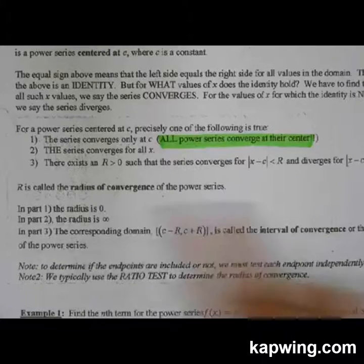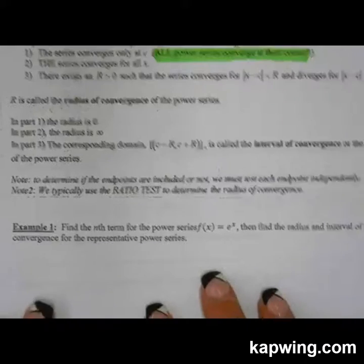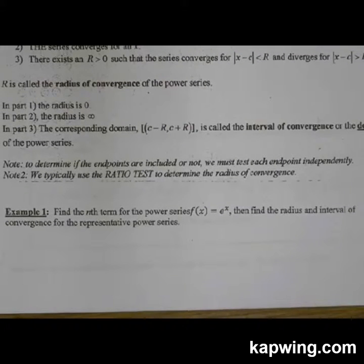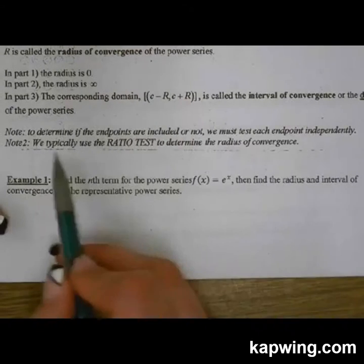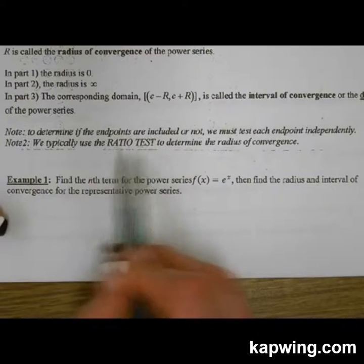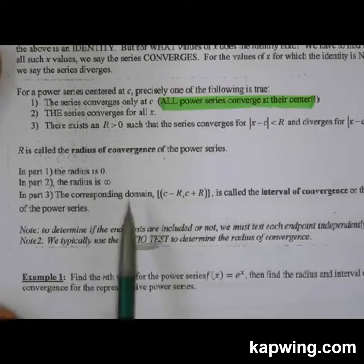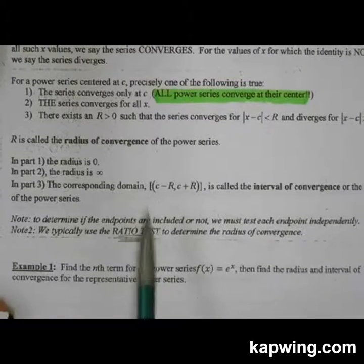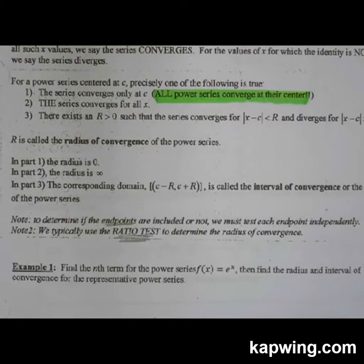One thing to keep in mind is that we typically use the ratio test when testing for convergence and finding our interval, but sometimes we'll use other tests. In a situation where we do have an interval with specific numbers, we are going to have to test the endpoints to see if they should be included or not.